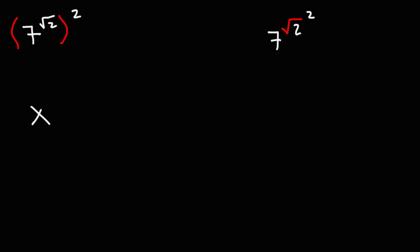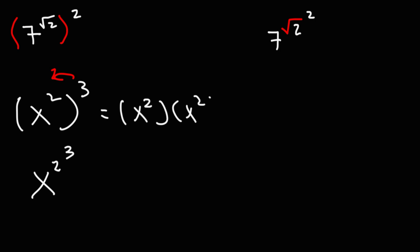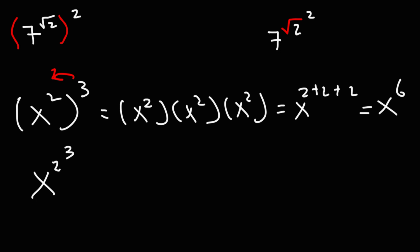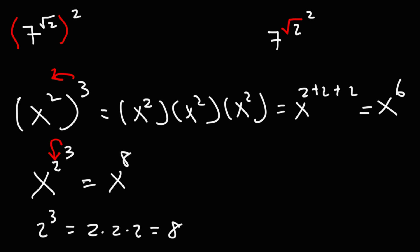What is the difference between these two expressions? Here, the 3 applies to the x squared term — we have 3 x squareds, so we're adding 2 three times, which is 2 times 3 or 6, giving x to the 6th. In the other case, the 3 only applies to the 2: 2 to the third power is 2 times 2 times 2, which is 8, so this is x to the 8, not x to the 6. When you have parentheses, the 3 applies to everything inside; without parentheses, the 3 only applies to the 2.